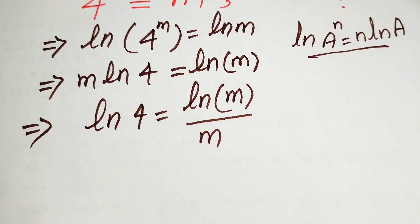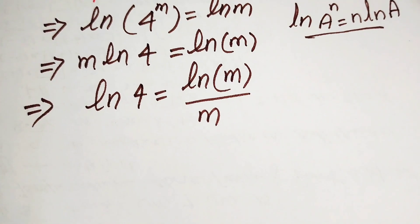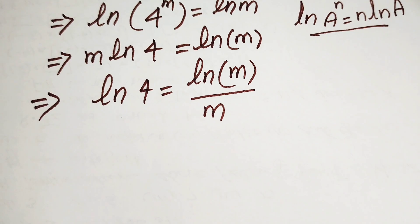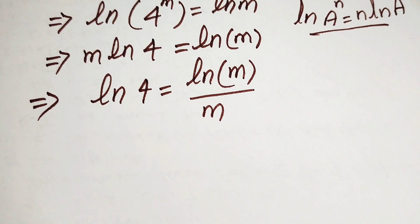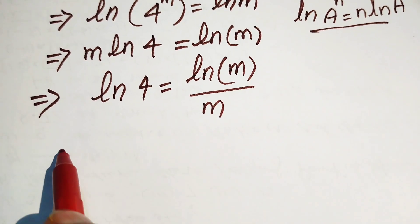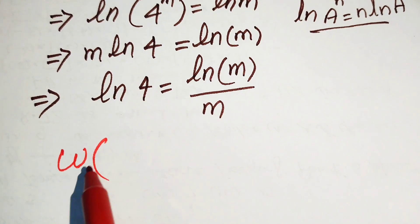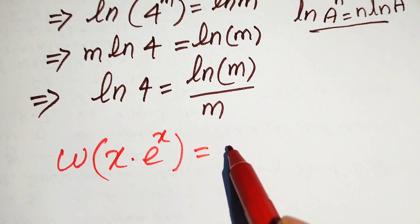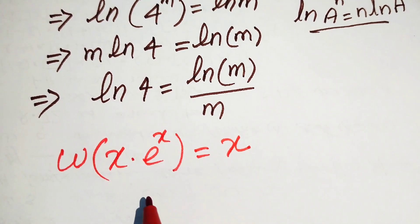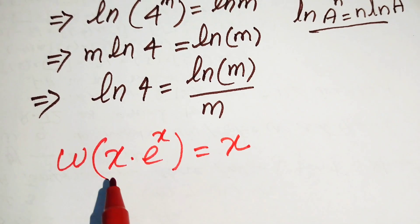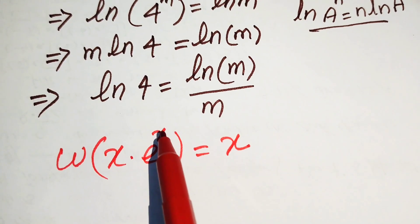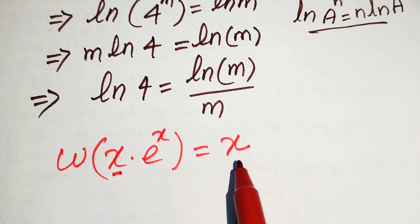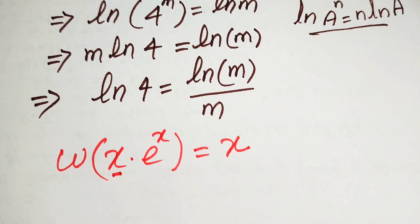Here I will introduce the Lambert W function. We use the Lambert W function to solve this problem. The Lambert W function is stated in this form: W of x times e to the power of x equals x. This is the standard form — if you have e to some exponent multiplied by that exponent, the output of the function is that exponent.